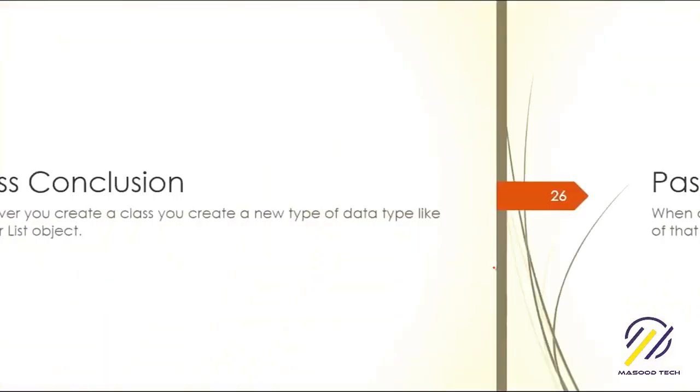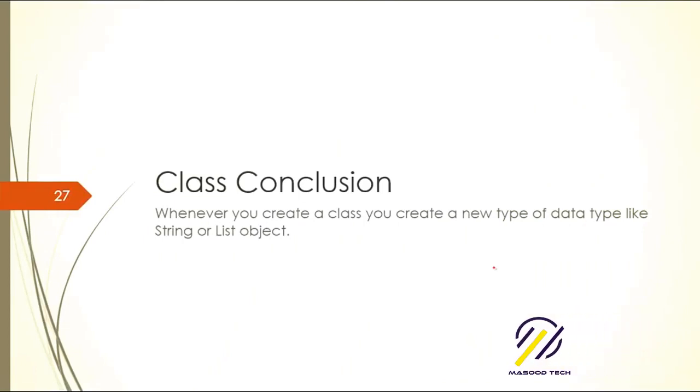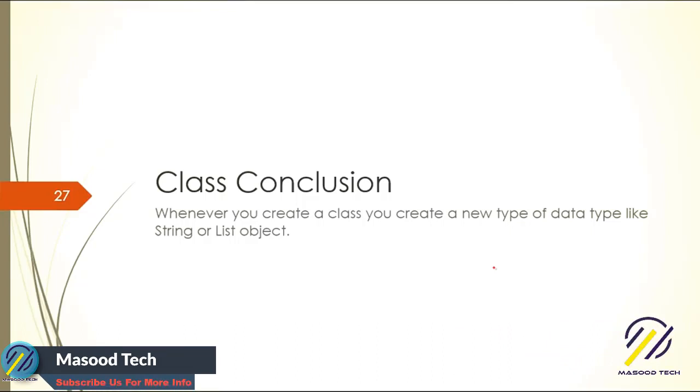We are very close to ending the class session—it's the conclusion. Whenever you create a class you create a new type of data. When you create a string it's a string class object, when you create a list it's a list type of object. Some people get afraid when you see data structure class—data structure is just a decent name for class. Don't freak out, it's just the class which represents a different format.